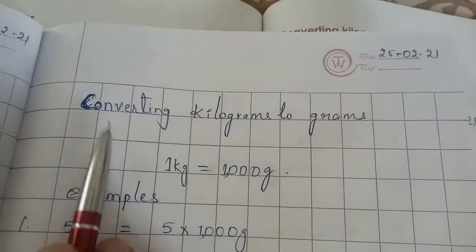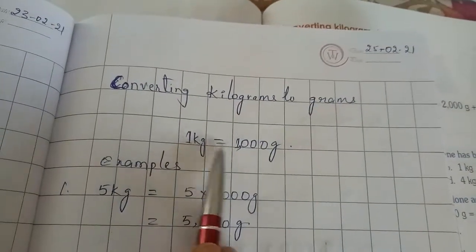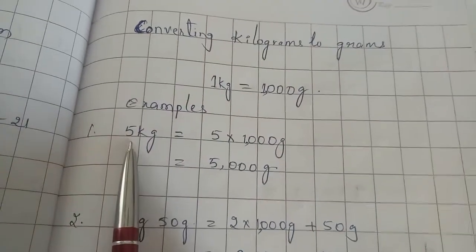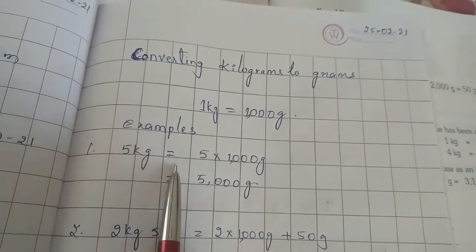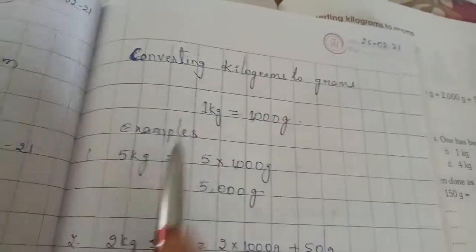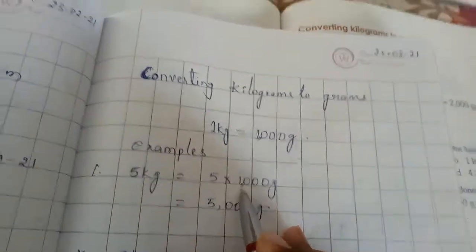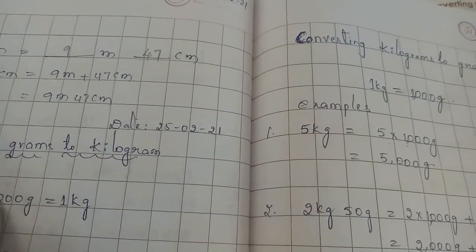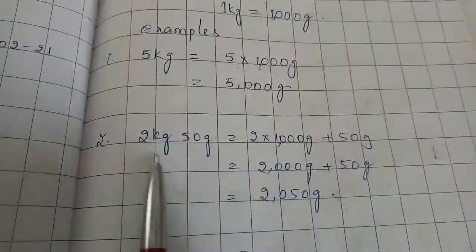Now convert kilograms to grams — 1 kg is equal to 1000 grams. Here, what they have given is 5 kg. We need to convert 5 kg to grams. 5 kg means 5 into 1000, and 1 kg means 1000, so 5 into 1000 means 5000 grams.